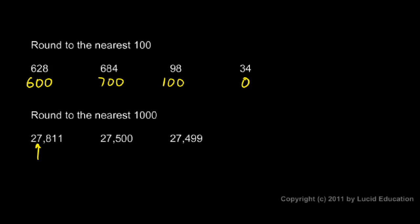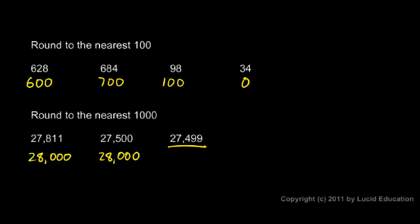In this next row we're told to round to the nearest thousand. For 27,811, we find the thousands place and look at the next digit — it's an eight, which is five or higher, so we round up. The answer is 28,000. For 27,500, the next digit is a five, so the rule says we round up — this also rounds to 28,000. For 27,499, we look at the thousands place and the next digit is less than five, so we round down — 27,499 rounded to the nearest thousand is 27,000.